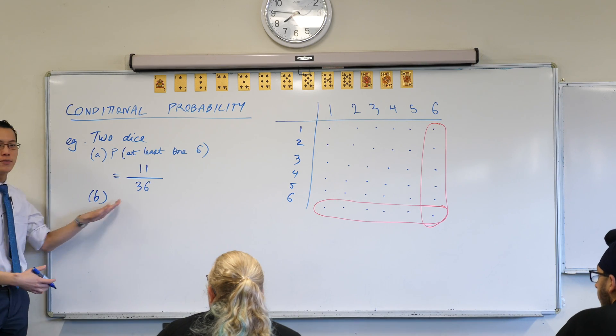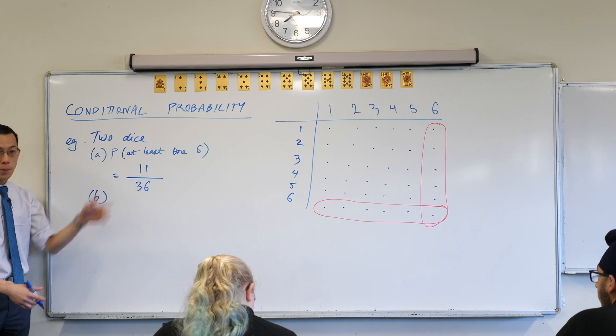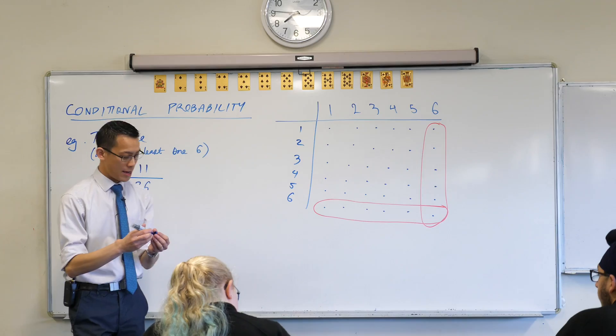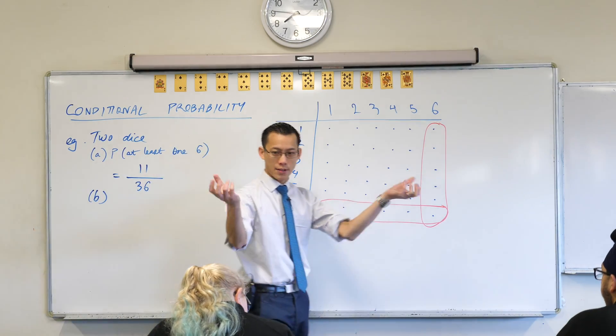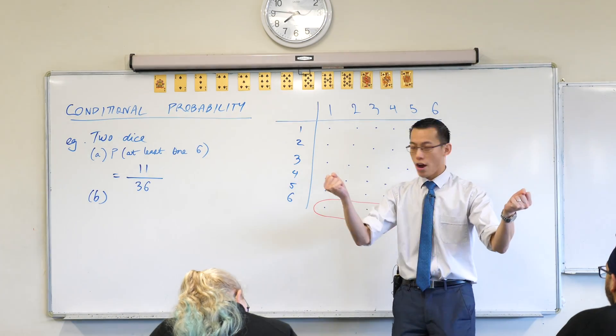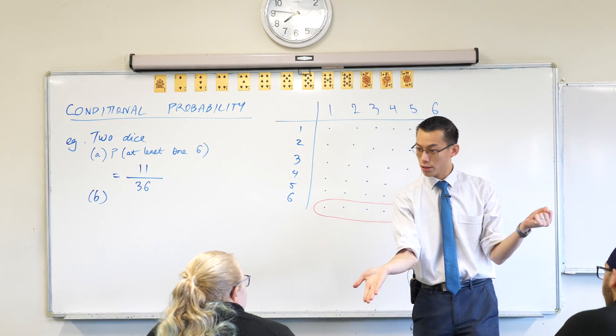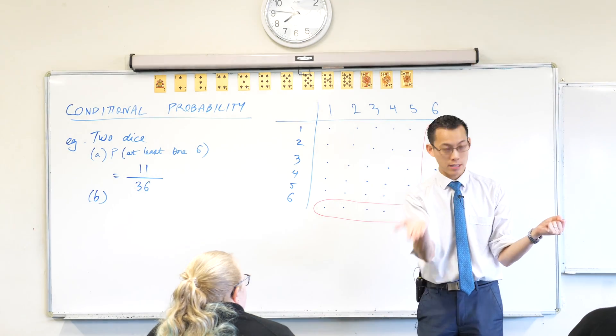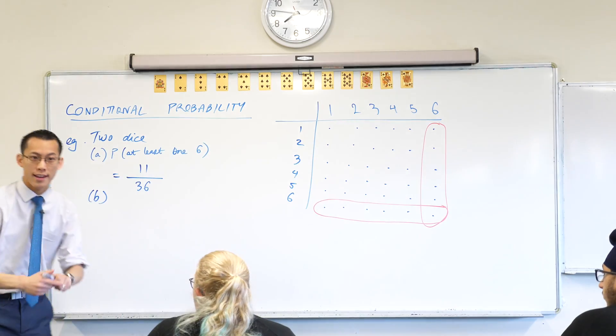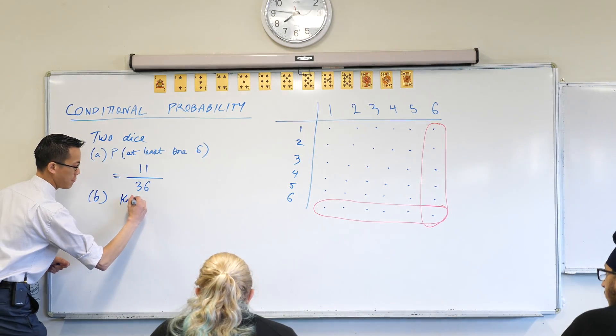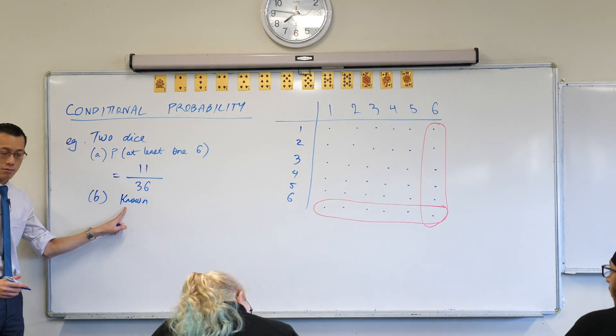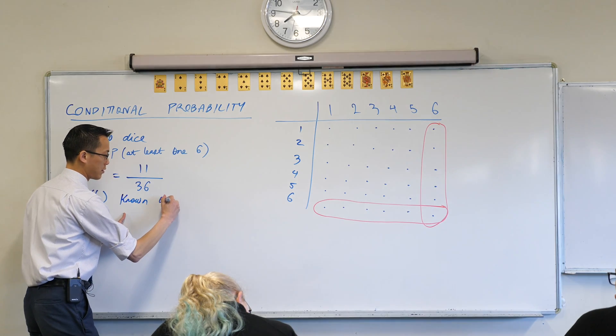So now I'm going to reveal some extra bits here. Suppose it's not you rolling the dice, suppose it's me. I roll the dice, I've got them in my hands, and then I open my hand and I show you one of the dice and I say, hey look, there's a six here, there's a six in my hand. So suppose we say it is known that there is one six.